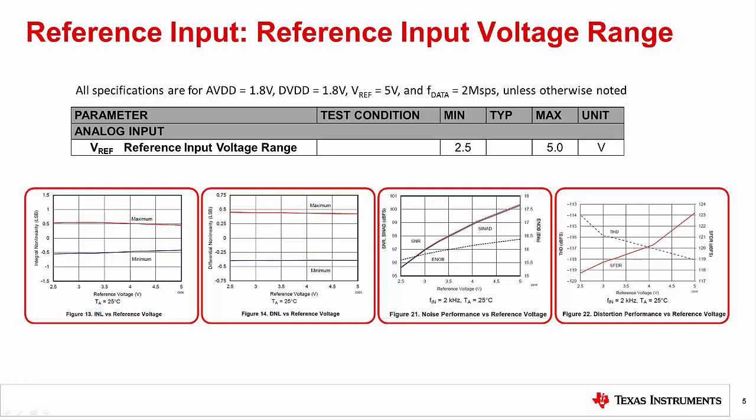Shown here are some data sheet excerpts from the ADS-9110 data sheet. In the data table, the specified reference range of 2.5 volts to 5 volts is given. The header at the top of the table indicates that the specifications are all defined with a VREF equal to 5 volts. The curves in the body of the data sheet can be used to better understand how adjusting the reference voltage will affect key parameters.